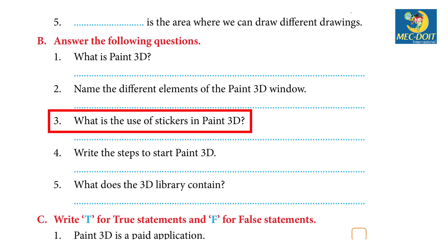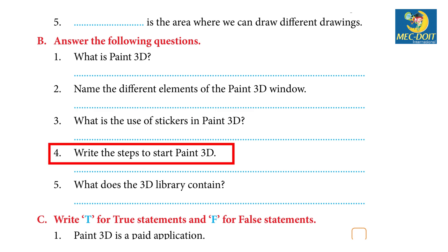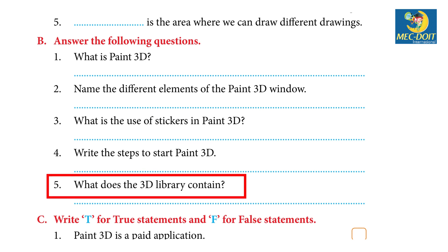3. What is the use of stickers in Paint 3D? Answer: With this tool we can select images from a ready-made image collection and apply them as stickers to our designs. 4. Write the steps to start Paint 3D. Answer: Step 1 — Click on the Start button. Step 2 — Choose the Paint 3D option from the menu or type Paint 3D in the search box. Step 3 — The Paint 3D window will open. 5. What does the 3D Library contain? Answer: It is a collection of thousands of free 3D models divided into several categories.